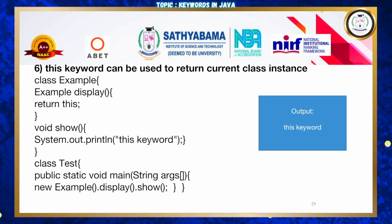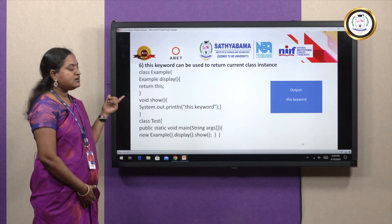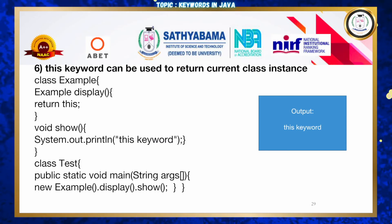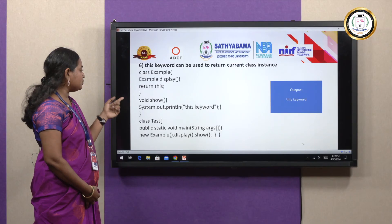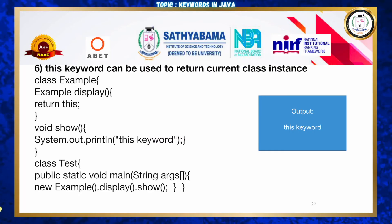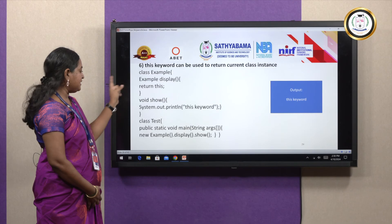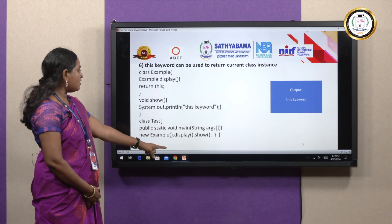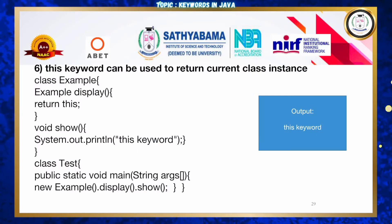Sixth use — 'this' can be used to return the current class instance. In class Example, a display method returns 'this'. In the show method, a system.out.println prints 'this'. In the main method, 'new Example().display().show()' is used — first the show method is called, then display, then Example. The output is the 'this' keyword reference.